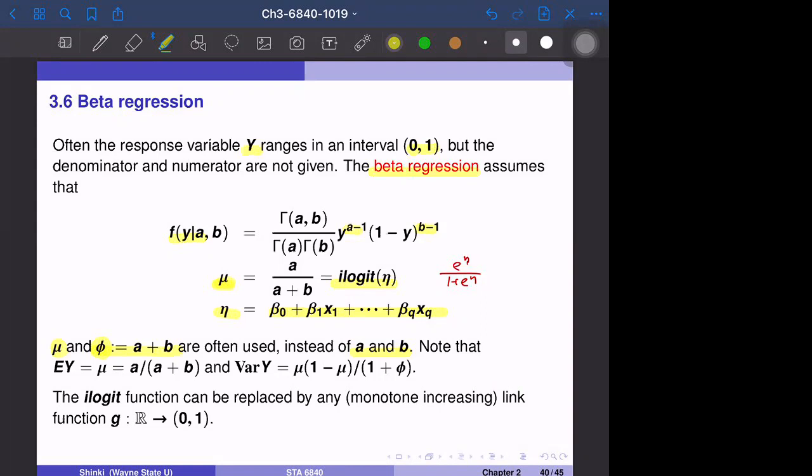φ is a plus b, so it corresponds to the variance parameter. Actually the expectation of y is μ, and the variance of y is μ times (1-μ) times 1 over (1+φ). So φ large means a plus b is large, which corresponds to large sample size, meaning smaller variance. The logit function can be replaced by any other link function from all real numbers to the open interval (0,1). So this is the beta regression model.